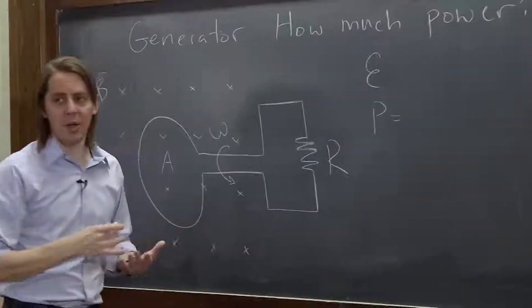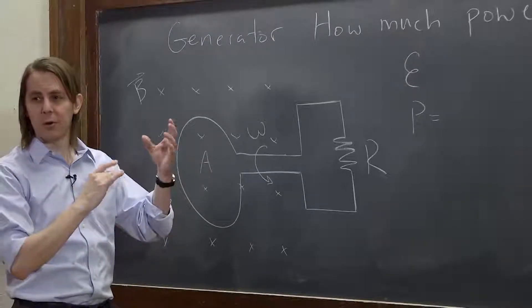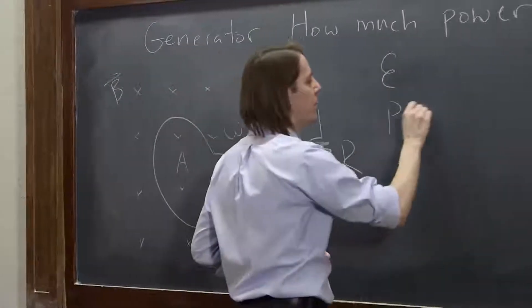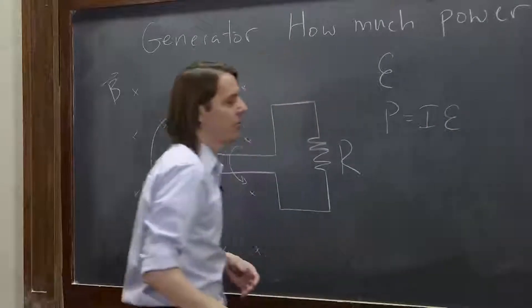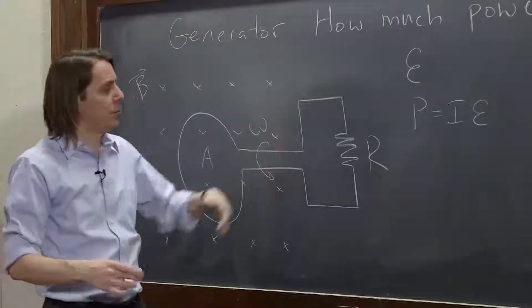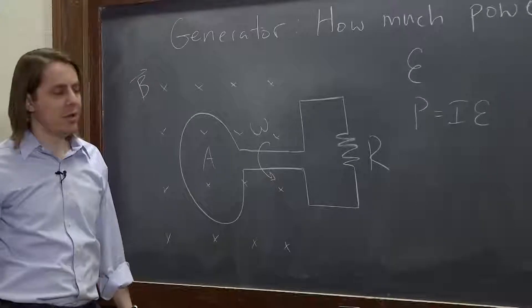in a DC circuit it was IV. It was I times the voltage across the resistor. Well, here it's just I, the current that you get, times that EMF. You're putting that EMF across a single resistor, so it's pretty much that simple.